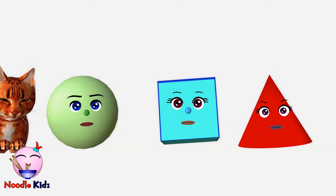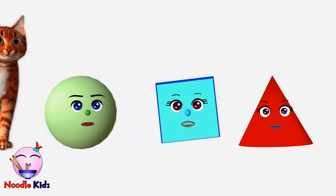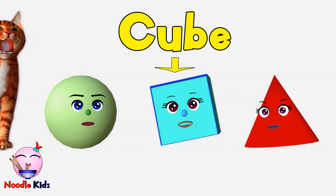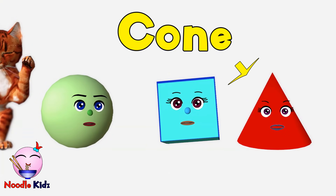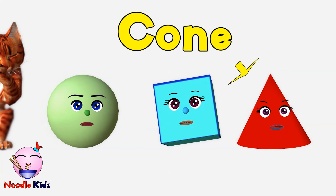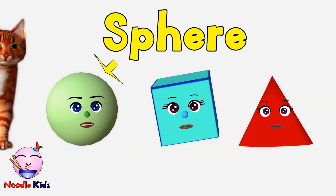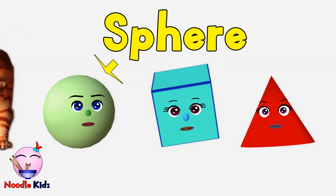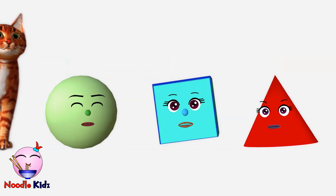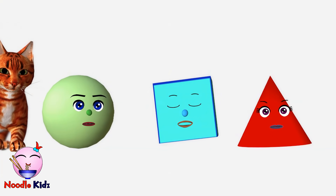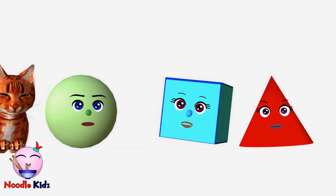First of all, just in case you forgot — I am a cube. And I am a cone. And I am a sphere. Look at us. Can you tell how the three of us look differently?